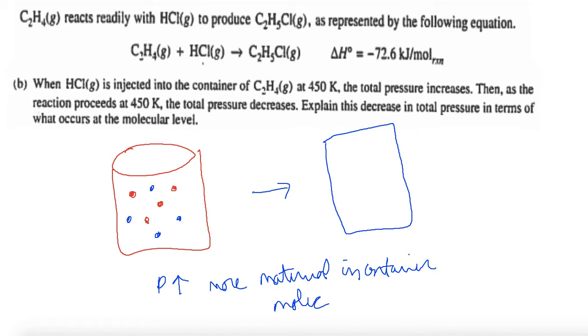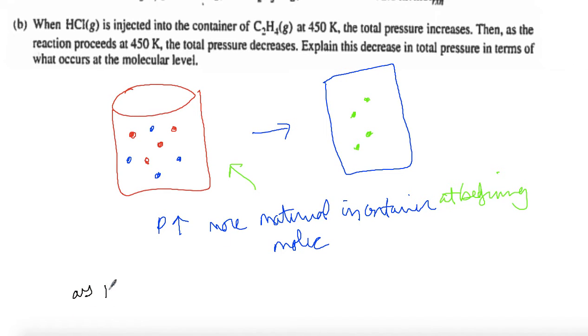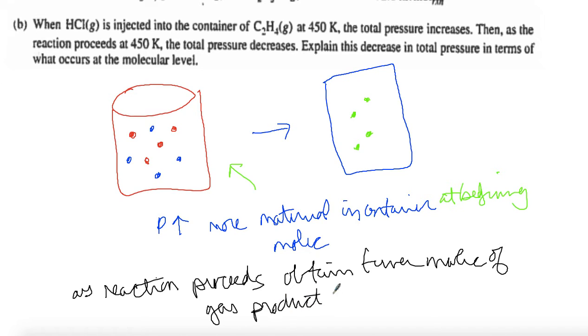But what happens once the reaction occurs? If the reaction goes to completion, we get a new substance. Instead of having eight things - I started with four of these and four of these - I would only get four of these. So there's eight things in there at the beginning and there's four things in there at the end. They're a little bigger, but they're not taking up much more space. So as the reaction proceeds, you obtain fewer molecules of gas product, so P goes down.